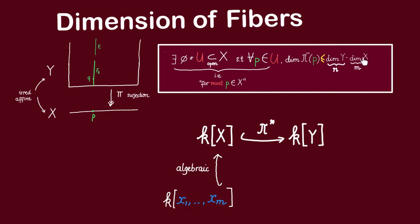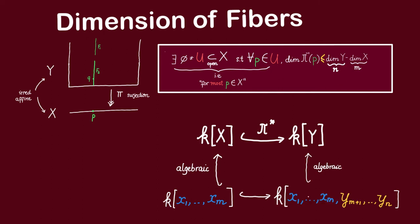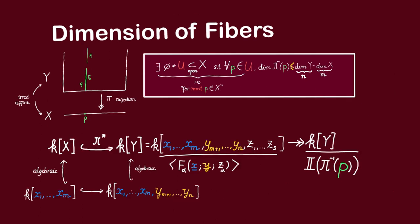Suppose that the dimension of X is m. This implies that we can find m algebraically independent functions x_1 to x_m in the coordinate ring of X, which can also be viewed as functions on Y via the pullback map. If the dimension of Y is n, then we can extend the set {x_i} to a set of n algebraically independent regular functions on Y. Thus the coordinate ring of Y is generated over the x_i's and y_j's by some elements z_1 to z_s that are algebraically dependent on the x_i's and y_j's.